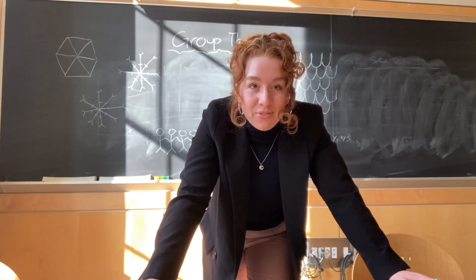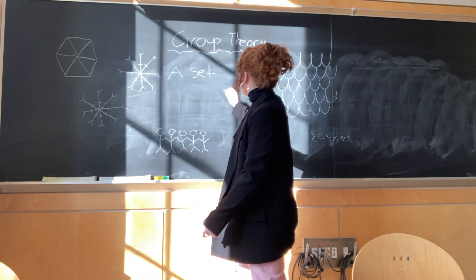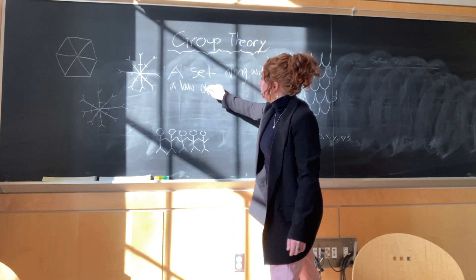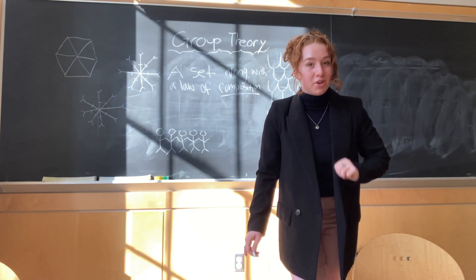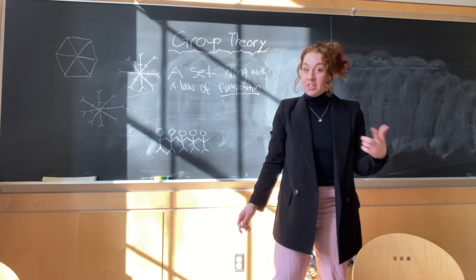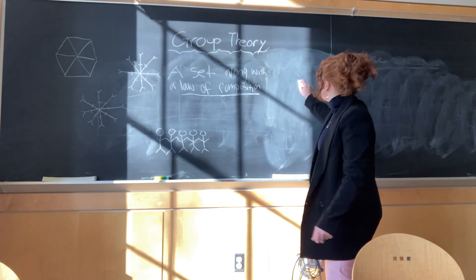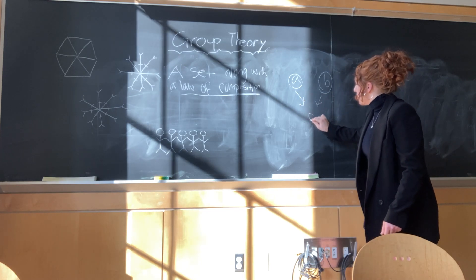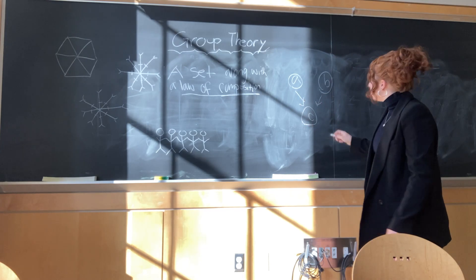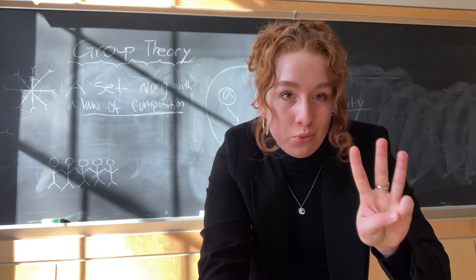So what is a group? And what's so theoretical about it? A mathematical group, by definition, is just a set along with a law of composition. And that set and law of composition must follow three fundamental rules of group theory. A law of composition is simply a rule that says if you have two elements in a group, element A and element B, you have to combine them to create a third element, C, which is also in the group.